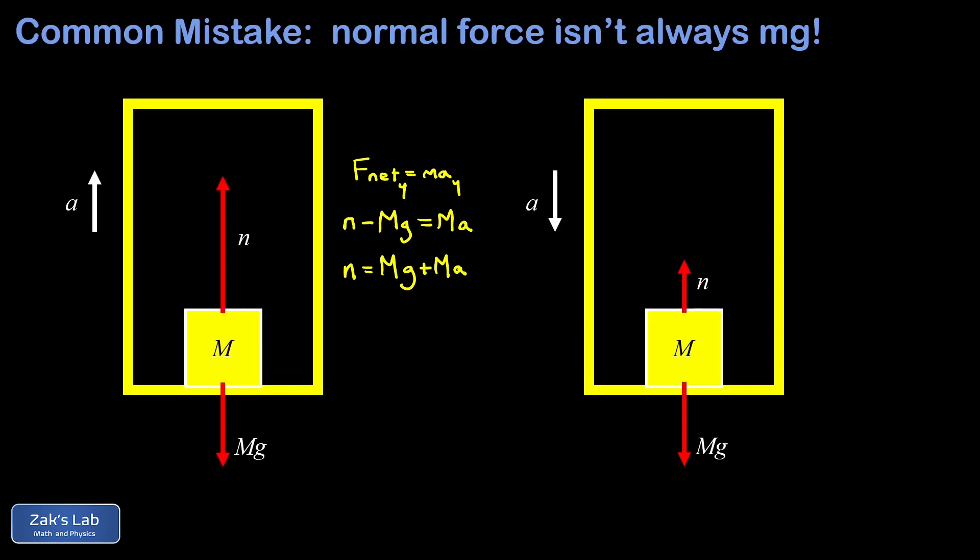So there's our force diagram. And again, we apply Newton's second law. And we'll keep using upward as the positive direction. And we actually just get all the same stuff here. I have n pointing up, mg pointing down, and this is going to be equal to the mass of this object m times the acceleration a.